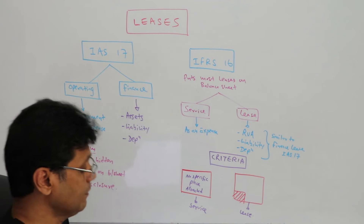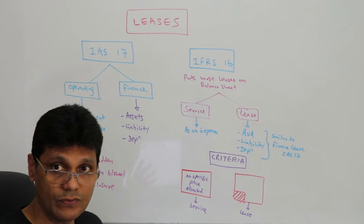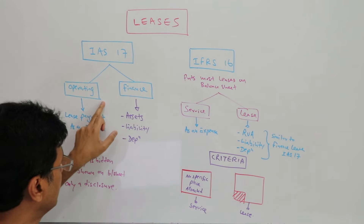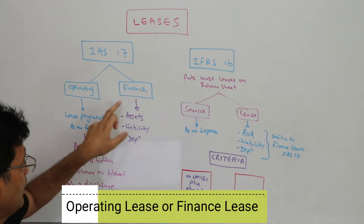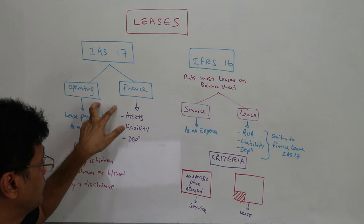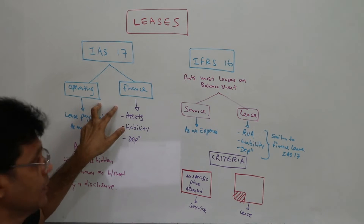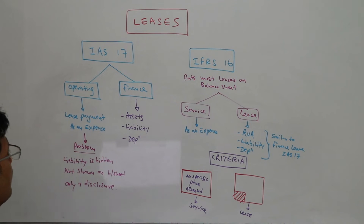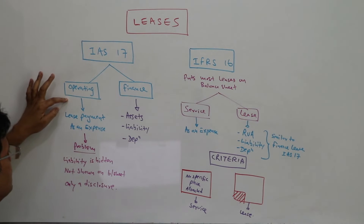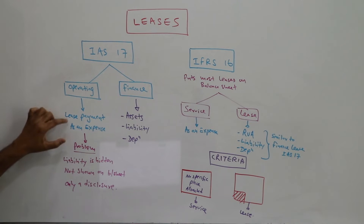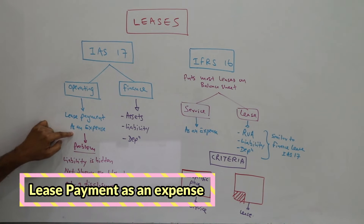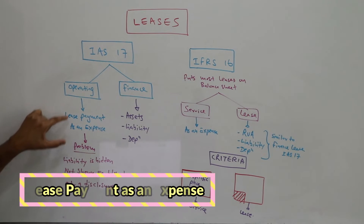Under IAS 17, from the point of view of the lessee, we used to recognize the lease as either an operating lease or a finance lease. When it is an operating lease, we need to recognize the lease payment as an expense in the profit or loss account.